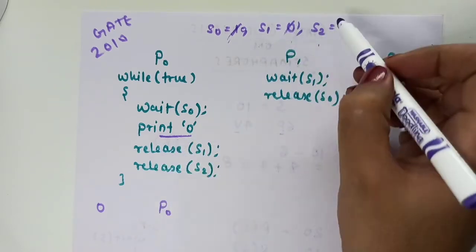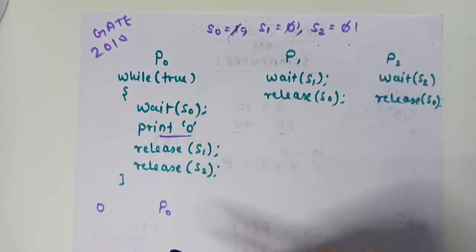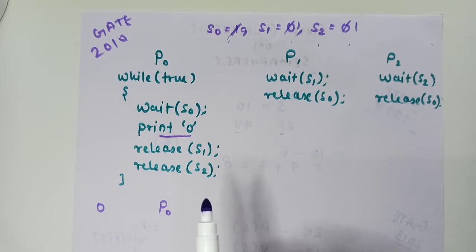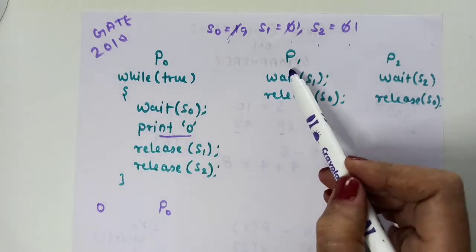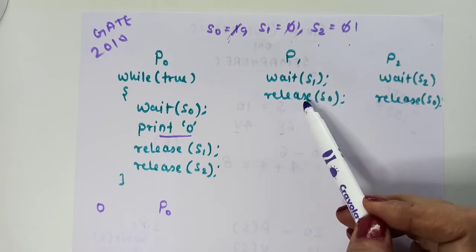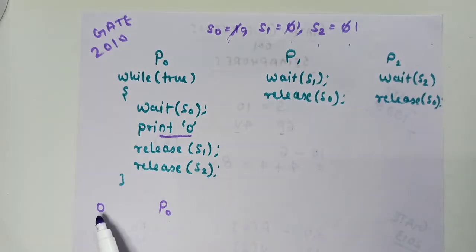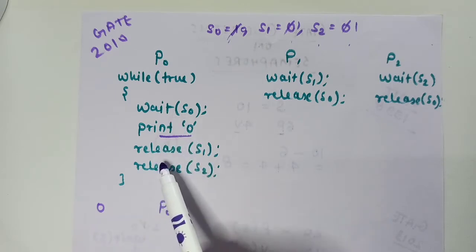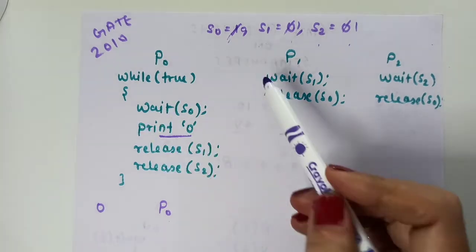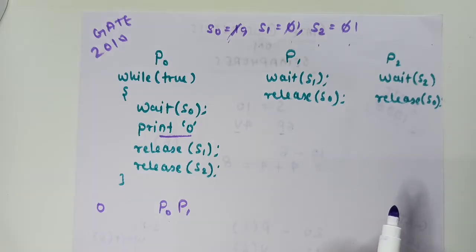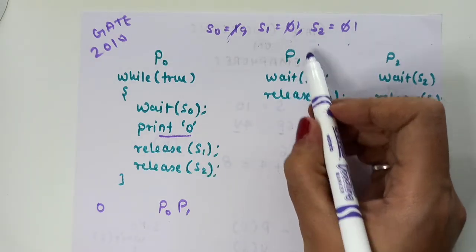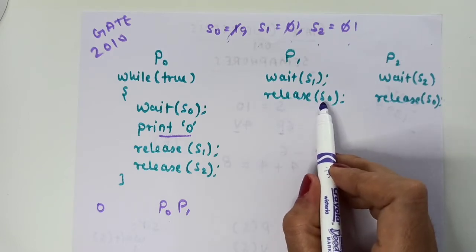P0 releases S1 and S2. Note that while(true) is written in P0's code, so P0 can execute this code as many times as possible. Whereas P1 and P2 have no while loop — they execute only once. So P0 has been executed one time.